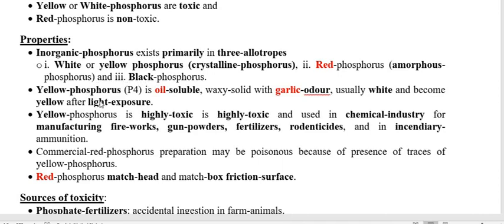If bioavailability is more, then toxicity is more. Another property of yellow Phosphorus is that it gives a garlic flavor, which is also a very important clinical sign to diagnose Phosphorus toxicity. When yellow or white Phosphorus comes in contact with light, it becomes yellow in color. When these two are exposed to oxidation, they get converted into red Phosphorus, which is non-toxic.